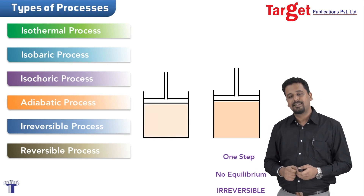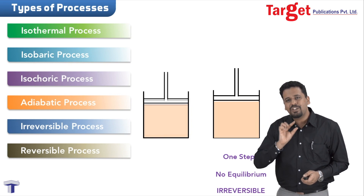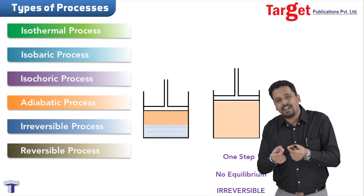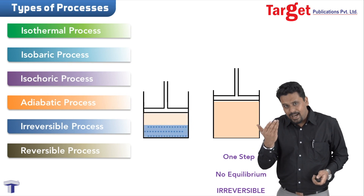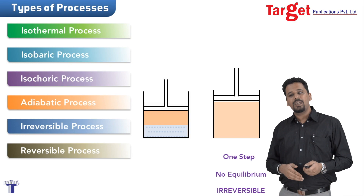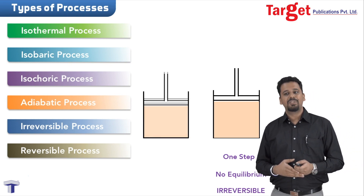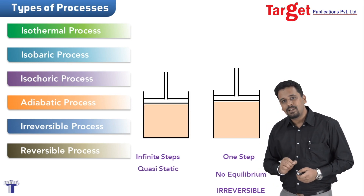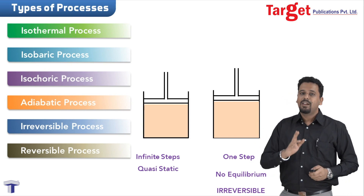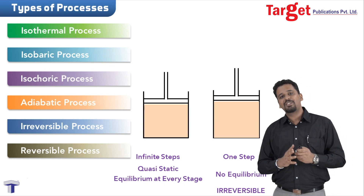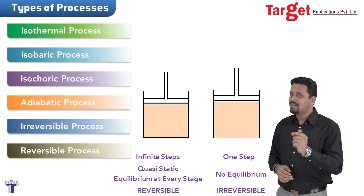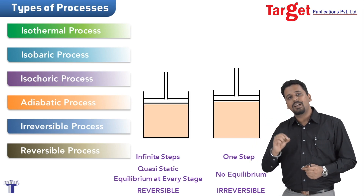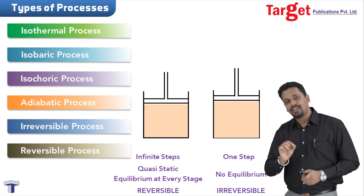Whereas if I do the same compression in small, small steps — one small compression followed by another, and so on — slowly the gas gets converted to liquid. And if I reverse the process slowly, step by step, the process comes back to its original position. This process happens in an infinite number of steps and is called a quasi-static process, meaning at every single step there is equilibrium. Such a process is called a reversible process.